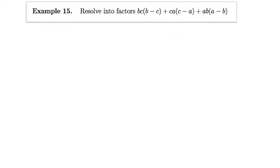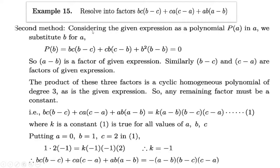Now let's see Example 15: resolve into factors bc(b − c) + ca(c − a) + ab(a − b). This is a cyclic polynomial of degree 3. Assuming the expression as a polynomial of a single variable, we determine one or more factors using the factor theorem. Considering the given expression as a polynomial of a, let p(a) equal to this expression.